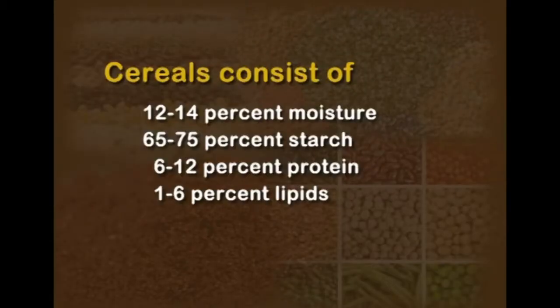Now we go on to module 2, which covers the composition and the nutritive value of cereals. Cereals are made up of 12 to 14% moisture, 65 to 75% starch, 6 to 12% protein and 1 to 6% lipids. Mostly the gross composition of all the cereals is similar.